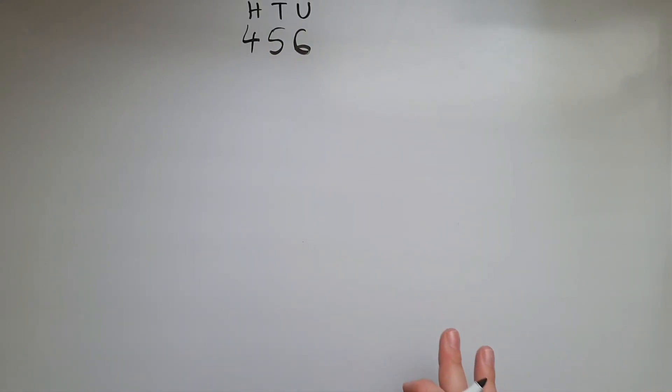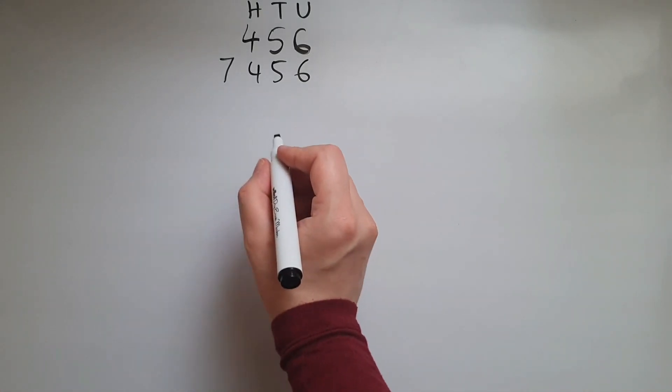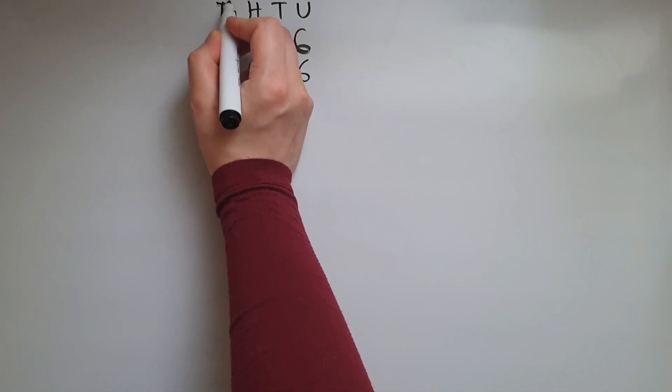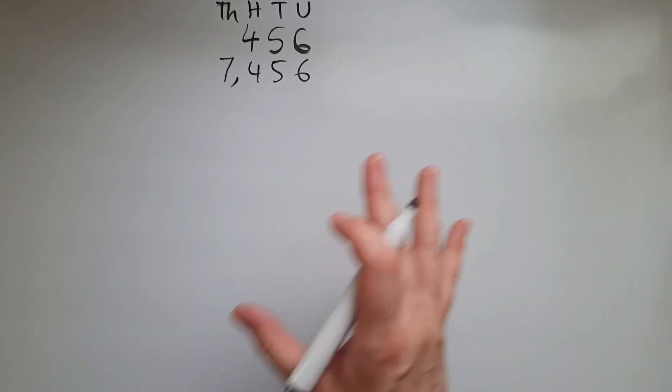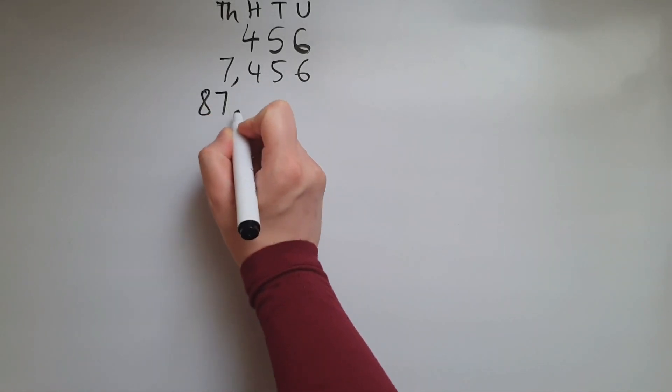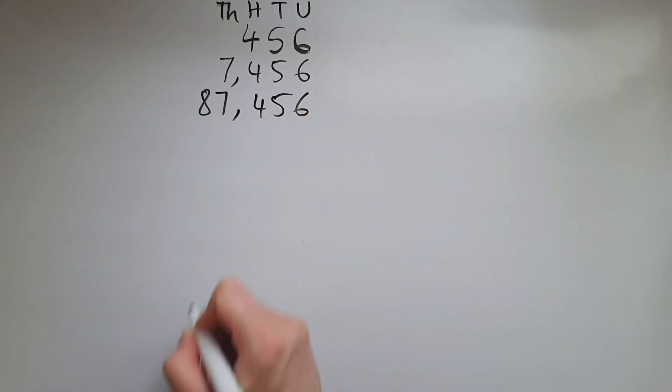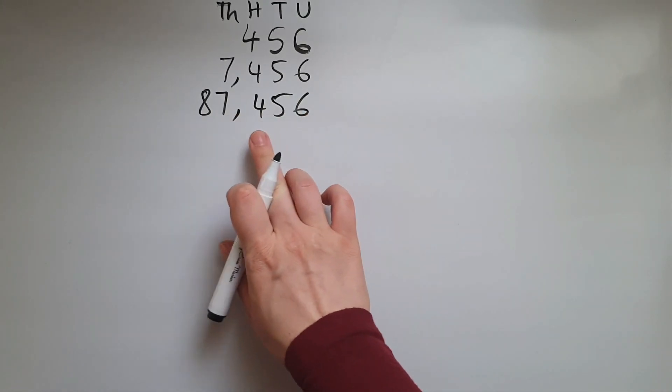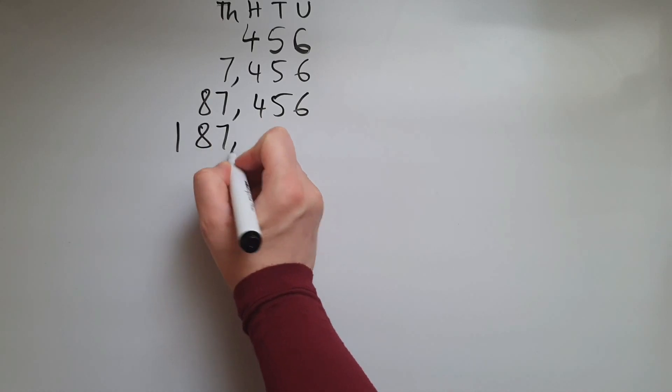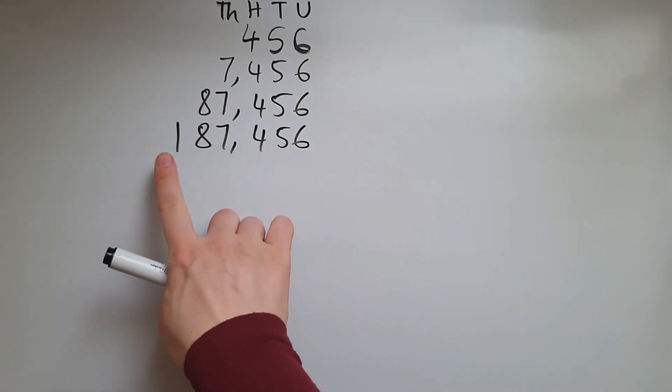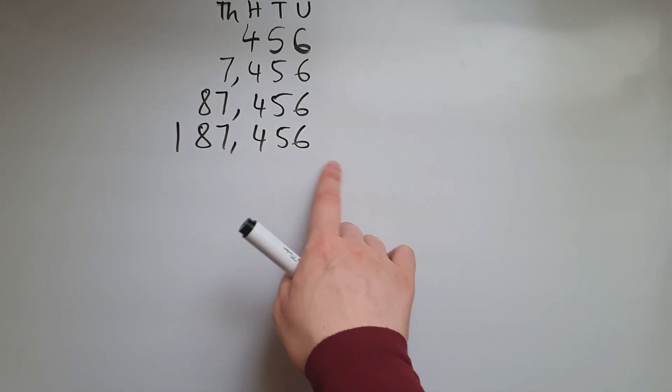So if I add one more digit in front, this becomes 7456. We could put a comma here to help us read it but it's not necessary. Also if I add another digit in front of this, then we get 87,456. One more, 187,456.